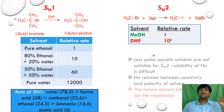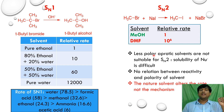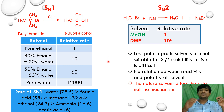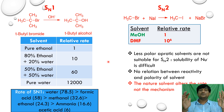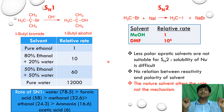We can conclude that less polar aprotic solvents are not suitable for SN2 reactions either, because even though they are aprotic, the low polarity makes it very difficult to dissolve and solvate nucleophiles in less polar aprotic solvents.